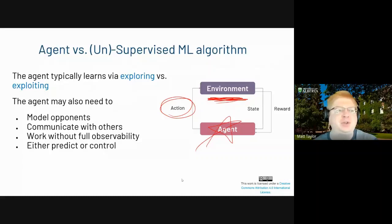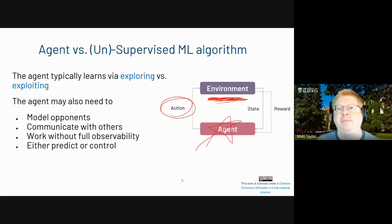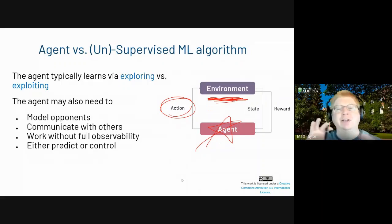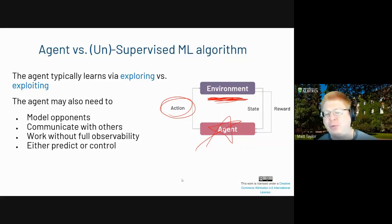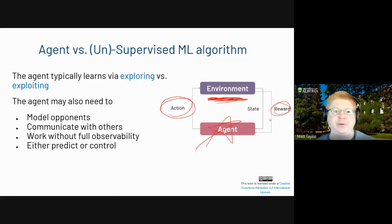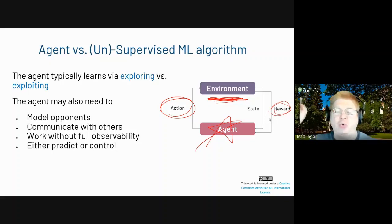You can also think about full observability — do I see the world perfectly? For instance, playing StarCraft or poker, you cannot see the whole world or other people's hands. Today we're mostly talking about control — how do I learn to collect this reward — but you could also think about predicting: given a policy, a way of acting, do I think it's working well or not?